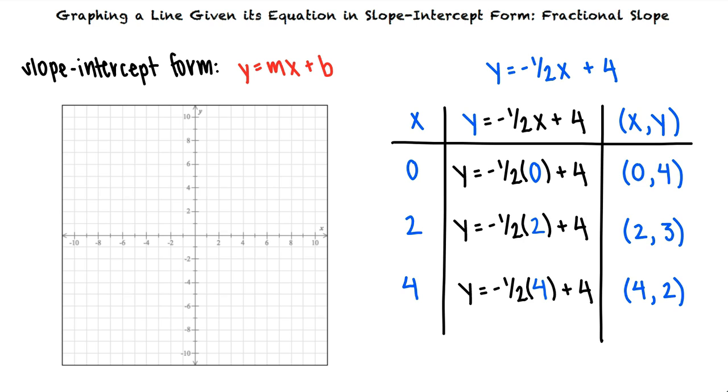Let's plot these 3 points that we've found. Now we can draw a line through them to determine our final answer. Because these 3 points are all on a line, we know we have found the correct solution.